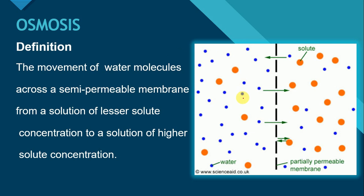Let us understand the term osmosis with the help of this diagram. This diagram mein aapko yeh joh small size ke dots nazer aah rahe hain, yeh water molecules ko present kare rahe hain. Aur large size ke joh dots hain, yeh solute ko represent kare rahe hain. Solution ki both sides left aur right ko center mein ek semi-permeable membrane divide kare rahe hain. Left side per the water molecules are more in number and on the right side the solute molecules are more in number.